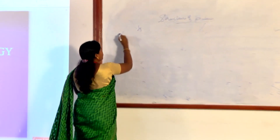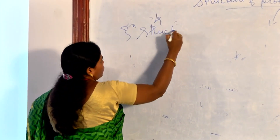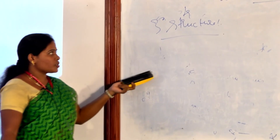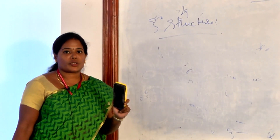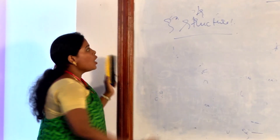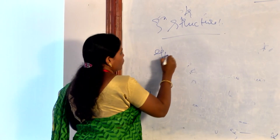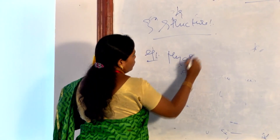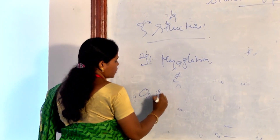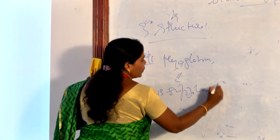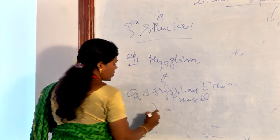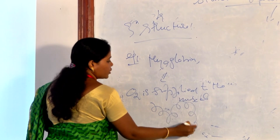The next level is tertiary structure. The tertiary structure is the three-dimensional structure of the polypeptide chain, or the three-dimensional structure of the functional protein. An example of tertiary structure is myoglobin, which supplies oxygen to the muscle.